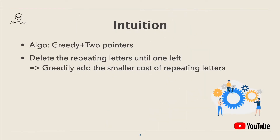The intuition to solve this question: the algorithm is greedy and two pointers. The main idea is that for every group of repeating letters, we want to delete the repeating characters until only one is left, and we want the minimum cost of deletions. That is, we will greedily add the smaller cost of repeating letters to the final output.